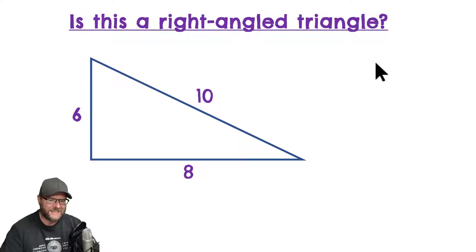All right, I have a question for you. Is this a right angled triangle? Now, I know it kind of looks like it is, but hopefully you remember from a previous video, unless there is the little square box in this bottom corner to represent a 90 degree angle, then we don't assume that it's a right angled triangle.